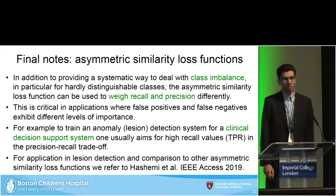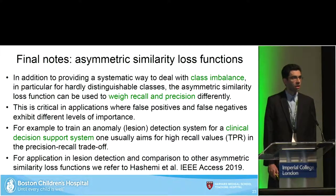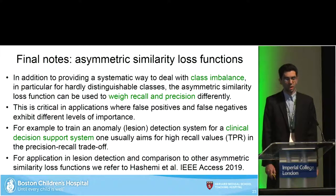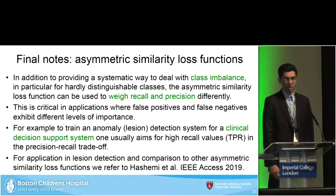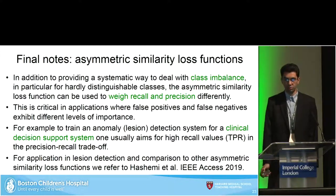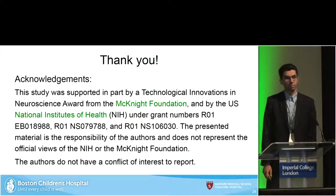A few more notes on the asymmetric similarity loss function: it gives a systematic way to deal with class imbalance, in particular for hardly distinguishable classes, and it gives you the ability to directly weigh recall and precision differently. This is critical in applications where false positives and false negatives do not have the same importance — for example, in a clinical decision support system you may aim for a higher recall value or true positive rate. One example is lesion segmentation and detection, and I refer to Ryan's other paper published this year. Thank you, and welcome questions.